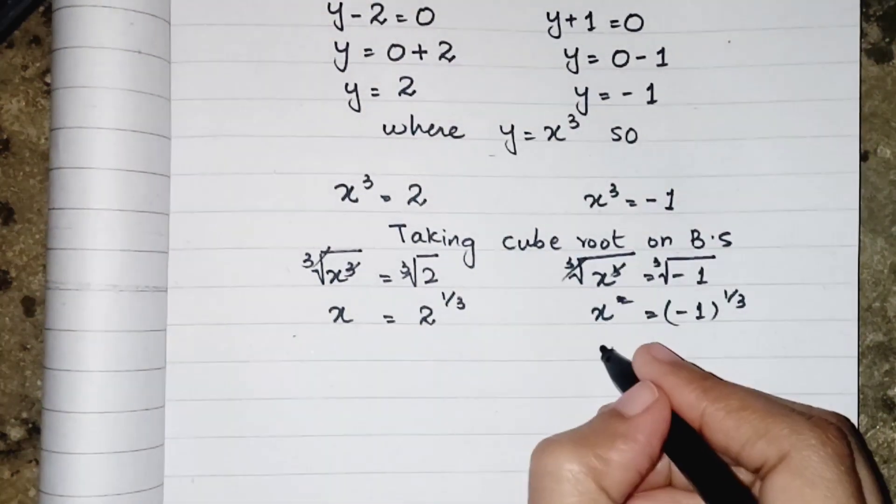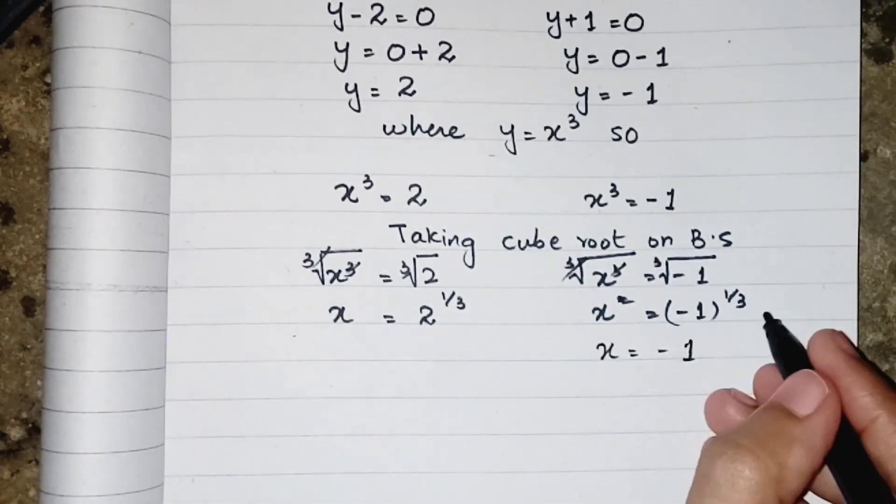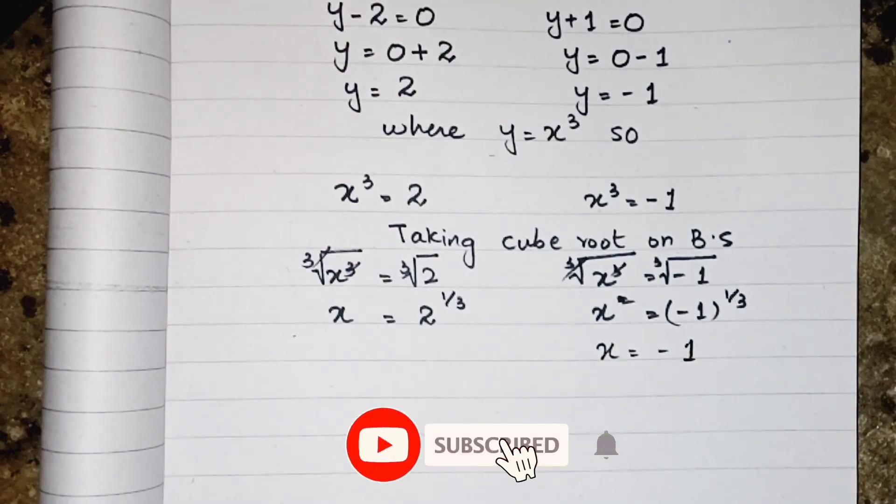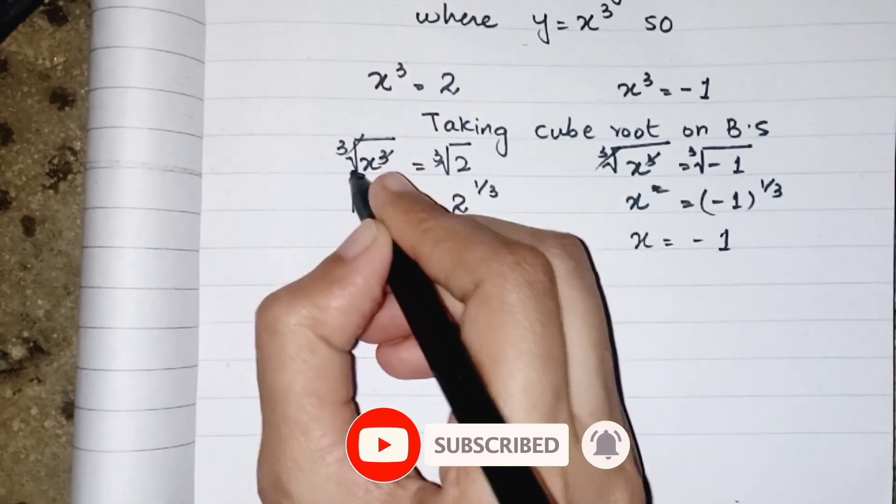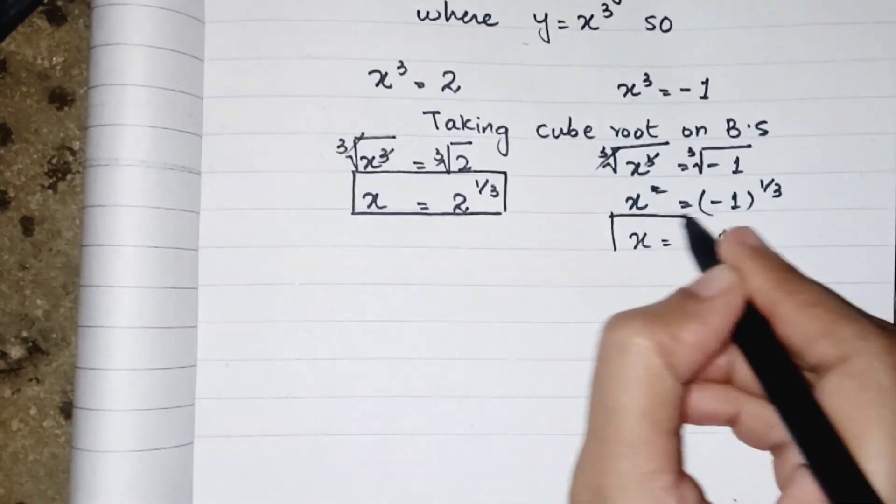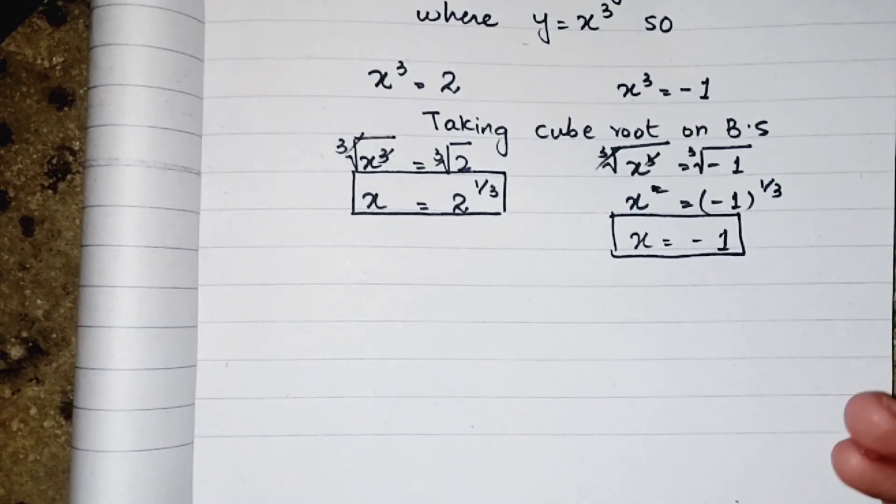Or you can say that x is equal to minus 1. Because whatever the power or the root, 1 is always 1. We get 2 values of x which are x equals to 2's power 1 upon 3 and x equals to minus 1. Now we have to check either these values justify our equation or not.